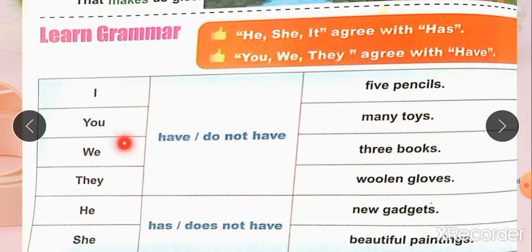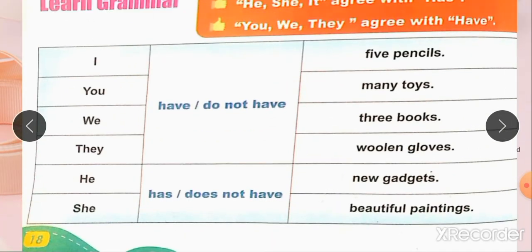For example: He has new gadgets, she has beautiful paintings. These are positive sentences — also called declarative sentences. سادہ جملے ہوتے ہیں جن میں ایک statement شو ہوتی ہے۔